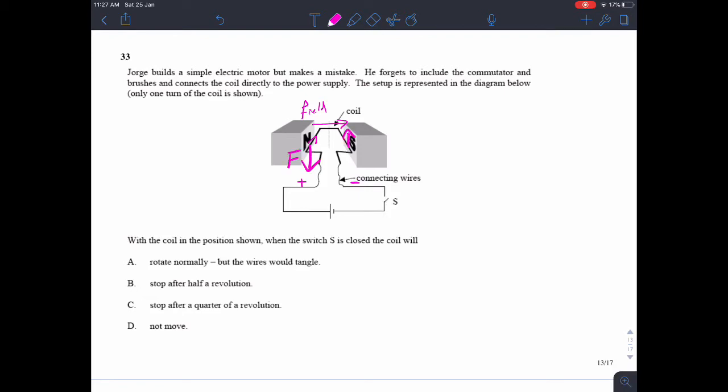And the force on this side is going to be going upwards. Now, normally in an electric motor, once this side got to the top and once this side got to the bottom, the polarity of the current would change. But in this case, they've forgotten to include that piece of equipment. So what's going to happen is the force on this side of the wire is going to stay in the downwards direction. The force on this side of the wire is going to stay in the upwards direction. So you're just going to end up with the coil being arranged like that. And so it's going to move a quarter of a revolution and then just stop moving. So C.